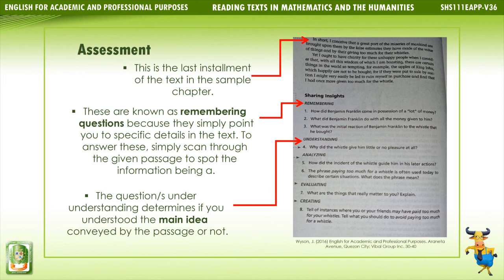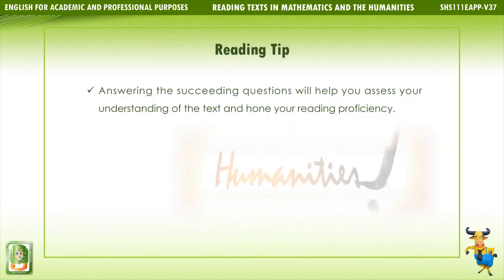Assessment: This is the last installment of the text in the sample chapter. These are known as remembering questions because they simply point you to specific details in the text — to answer these, simply scan through the given passage to spot the information being asked. The question or questions under 'understanding' determines if you understood the main idea conveyed by the passage or not. Reading tip: Answering the succeeding questions will help you assess your understanding of the text and hone your reading proficiency.